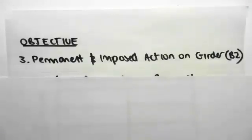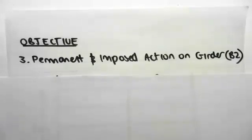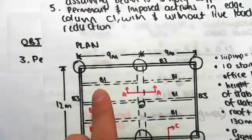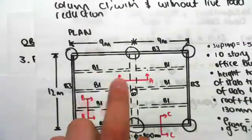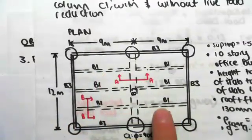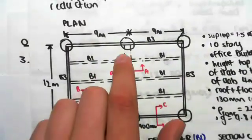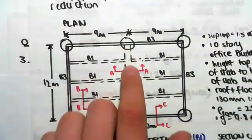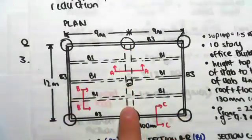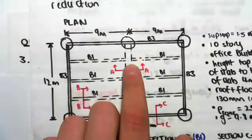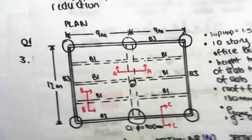Hey guys, the objective with this video is to find the permanent and imposed action on the girder B2. In the previous video, we found the UDLs in B1, the joists. Now we're looking at finding the loading in B2, this central girder.